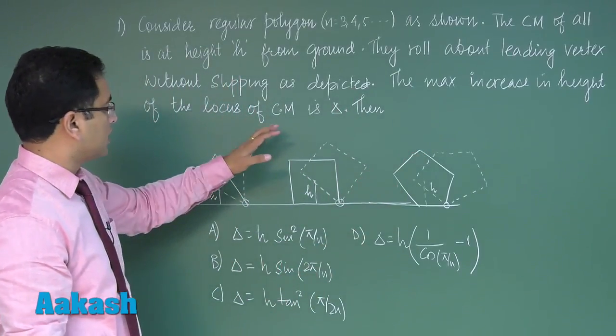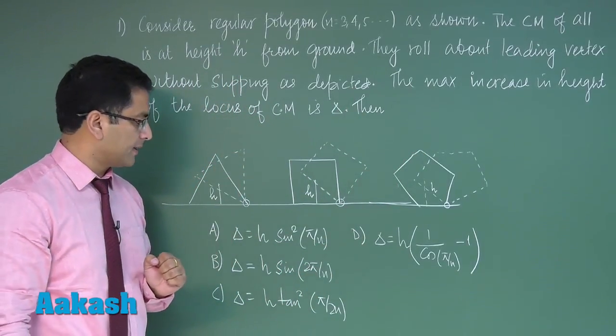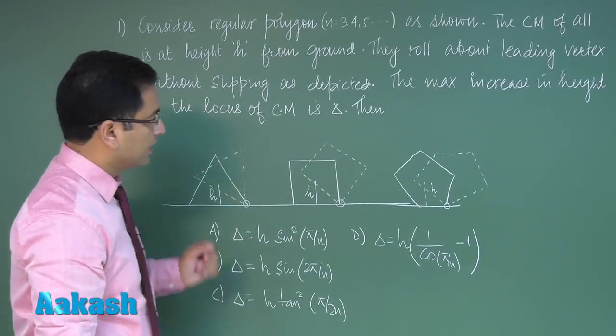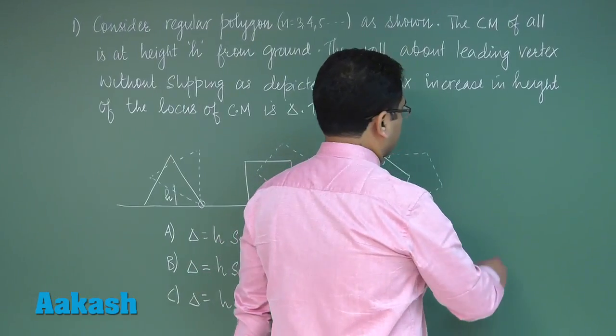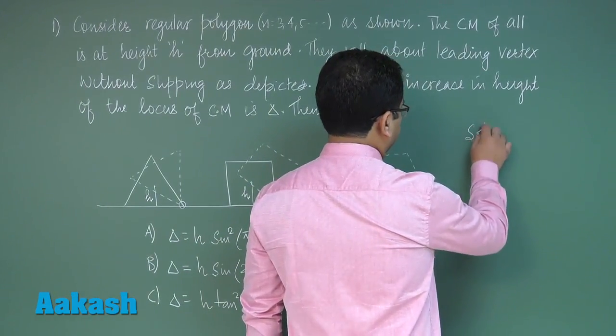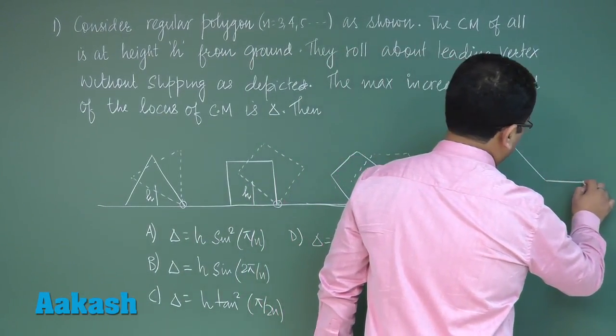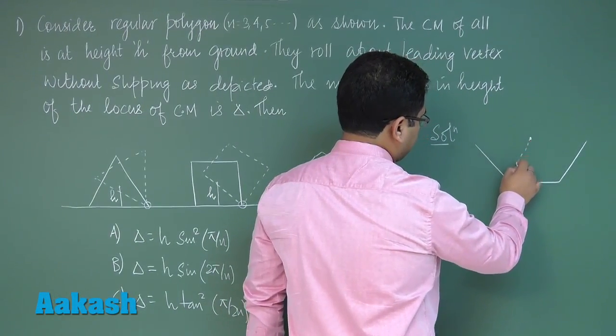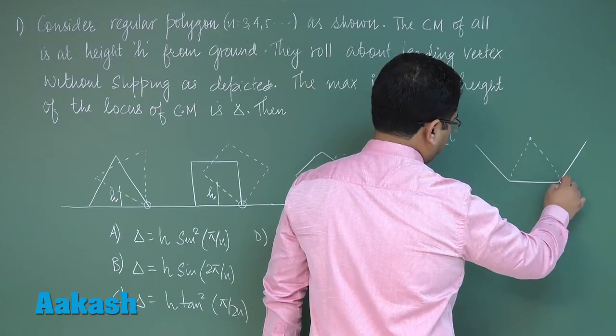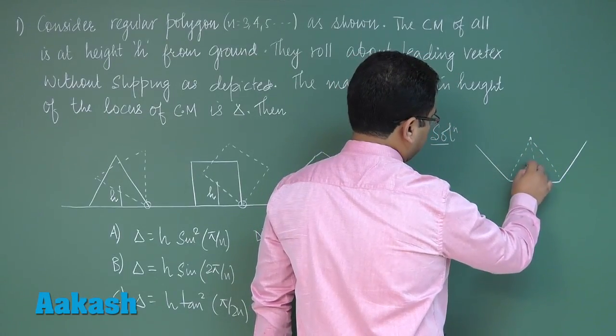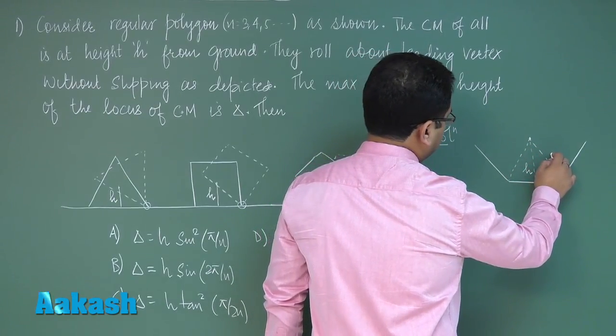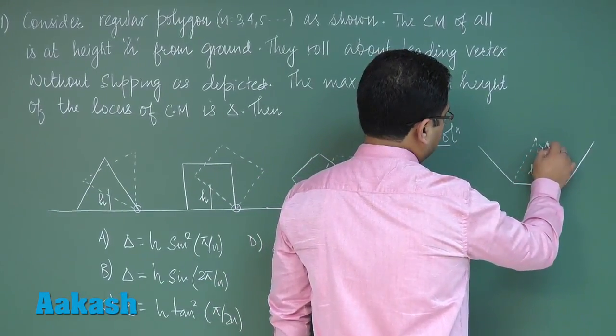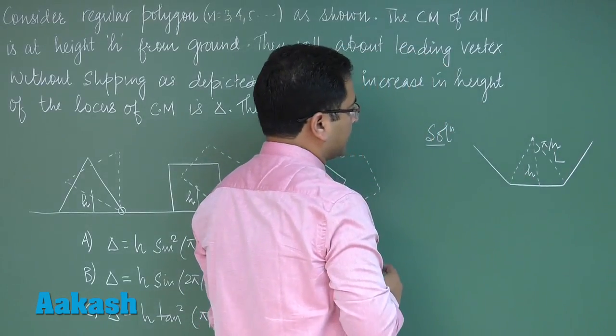The maximum increase in height of the locus of center of mass is delta. We need to calculate the correct value of delta. Rather than deal with individual ones, let's try to take a generic polygon, something like a polygon of n sides. This is the circum center and this is the initial height which is h. Let's say this circum radius is l.